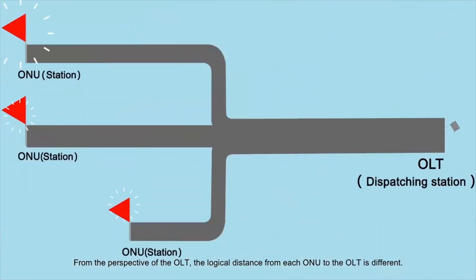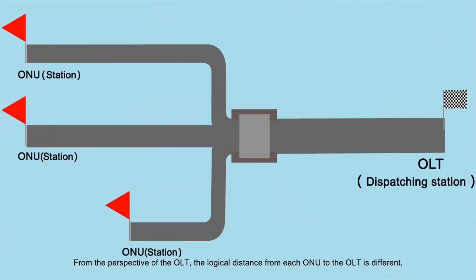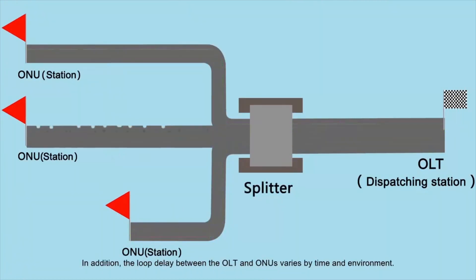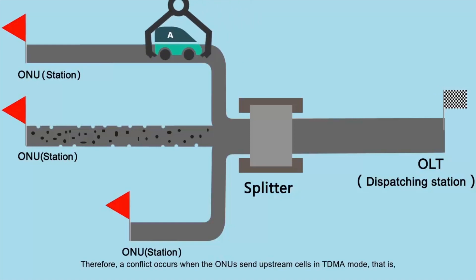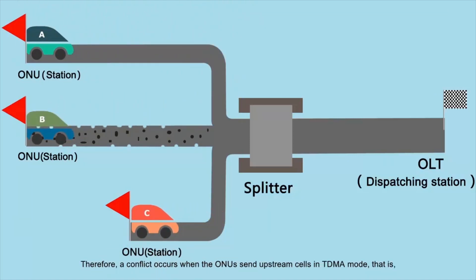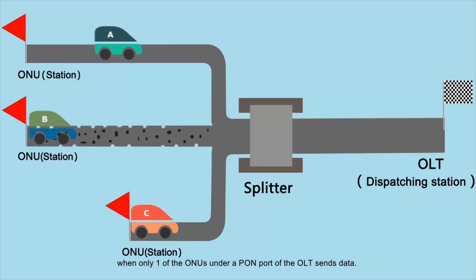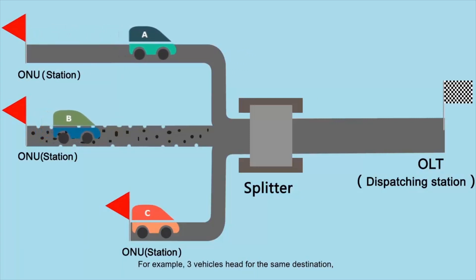Ranging: From the perspective of OLT, the logical distance from each ONU to the OLT is different. In addition, the loop delay between the OLT and ONUs varies by time and environment. Therefore, a conflict occurs when the ONUs send upstream cells in TDMA mode — that is, when only one of the ONUs under a PON port of the OLT sends data.